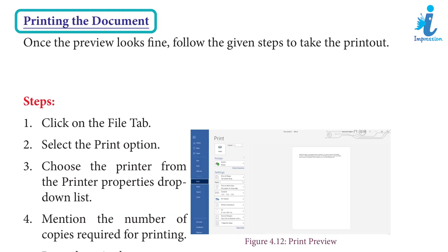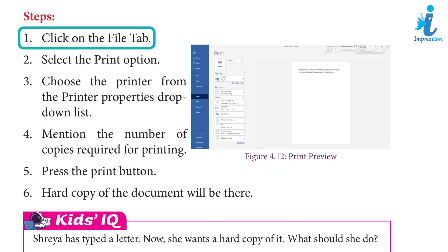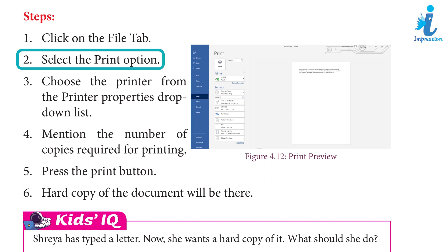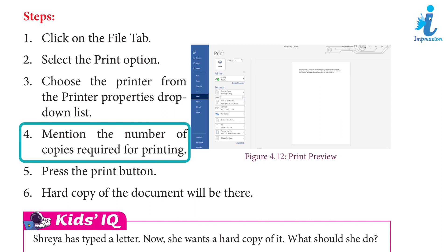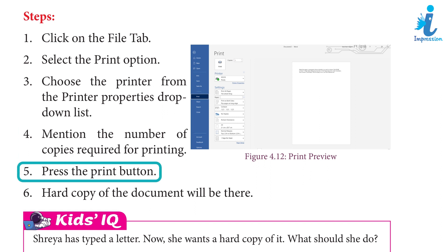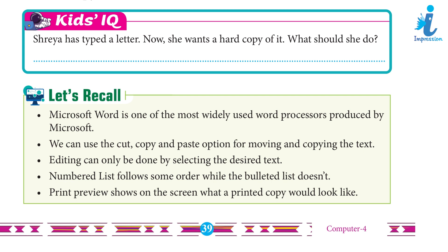Printing the Document: Once the preview looks fine, follow the given steps to take the printout. Step 1: Click on the File tab. Step 2: Select the Print option. Step 3: Choose the printer from the Print Properties drop-down list. Step 4: Mention the number of copies required for printing. Step 5: Press the Print button. Step 6: A hard copy of the document will be produced. Shreya has typed a letter and now wants a hard copy of it. What should she do?